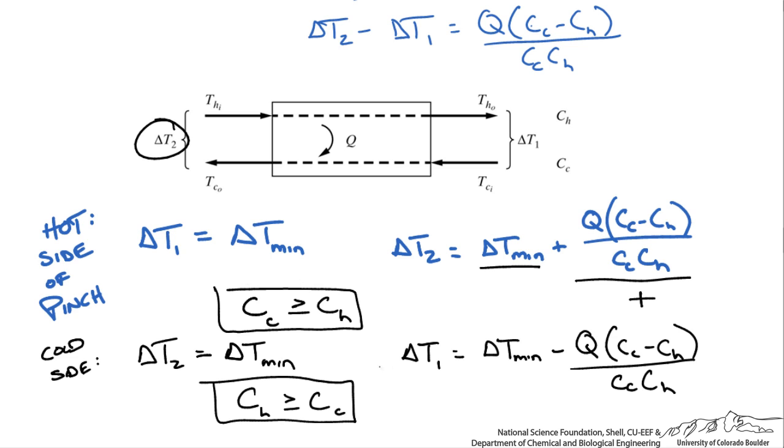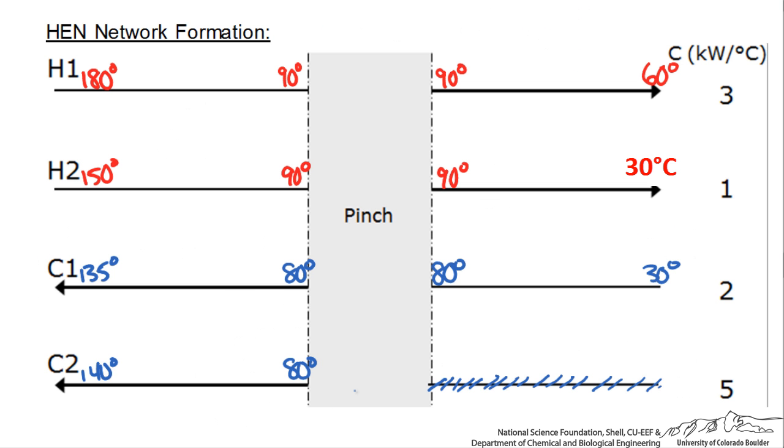We use these two guidelines when we are designing our heat exchanger networks to match streams and determine whether or not it is a feasible match. Let's practice this on our diagram where we have our four streams, our pinch point, our pinch temperature for both the hot and cold stream, and our source and target temperatures.